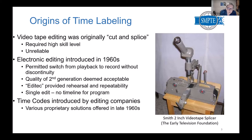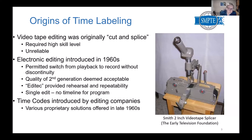Electronic editing was introduced in the 60s. What this meant was you had a machine that could switch from playback to record without discontinuity, so you could play back part of a show and then switch to record and put in a new segment. What you were recording was second generation, coming from another tape. Early VTRs' second generation was pretty bad, but people eventually decided it was acceptable, so electronic editing with a transmittable result became possible.